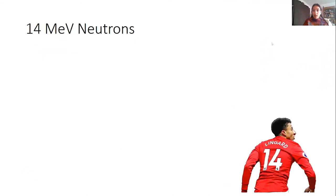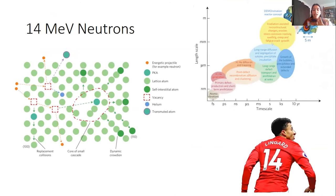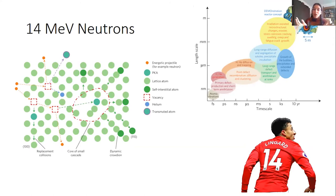When a neutron hits a material it causes displacements — like a snooker ball hitting other snooker balls, creating damage cascades. The damage varies across different length scales and time scales. Without a fully functioning commercial reactor to test materials, research focuses on smaller length and time scales and extrapolates to larger ones — a key challenge for materials scientists and engineers.